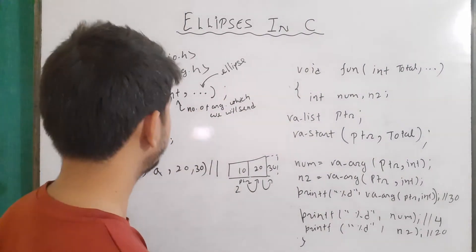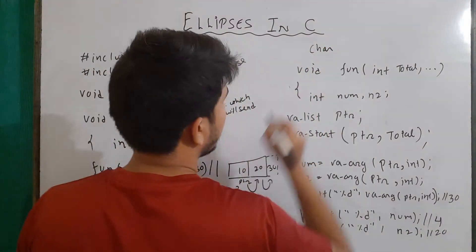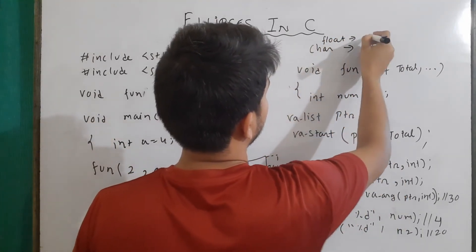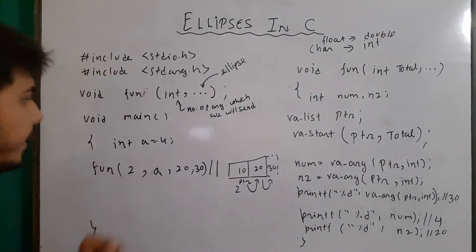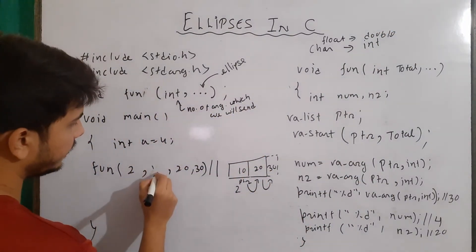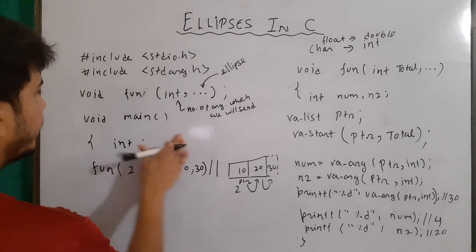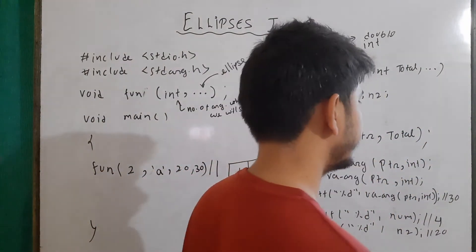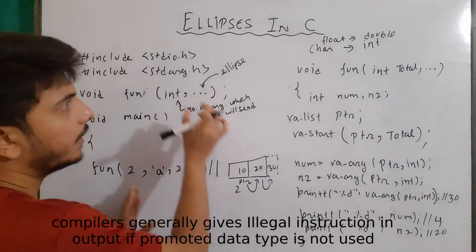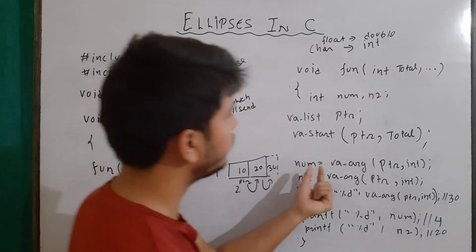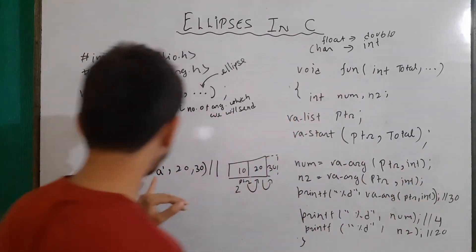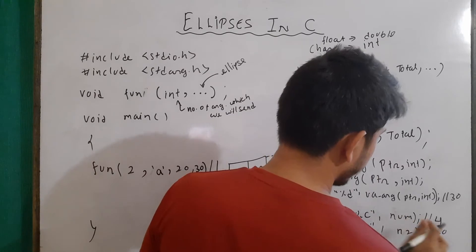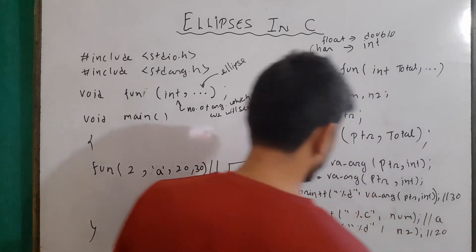One thing to always remember when using ellipses is that character arguments are promoted to integer, and float are promoted to double. So let's say I am sending a character value, say the character 'a'. Because char is promoted to int when using ellipses, here instead of writing char I will use integer. So num will hold the ASCII value of this character, which is 97. And then instead of writing %d I can write %c and it will give me output as the character 'a'.